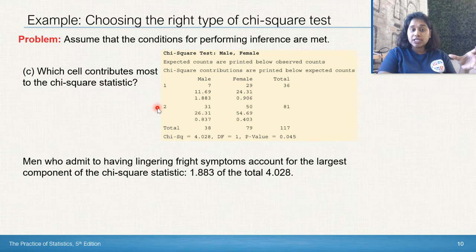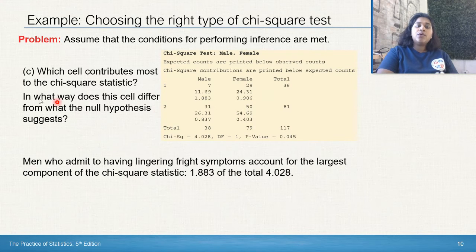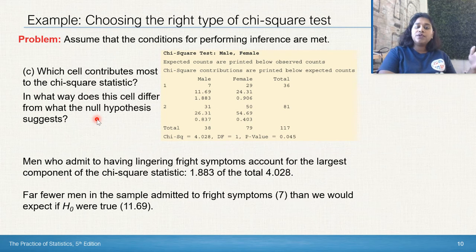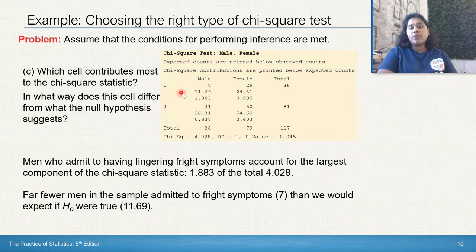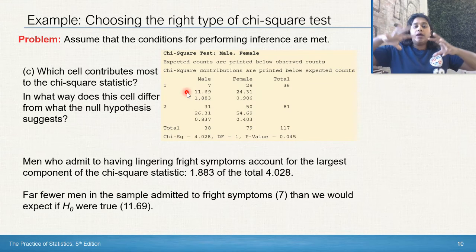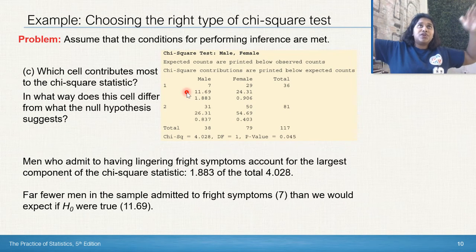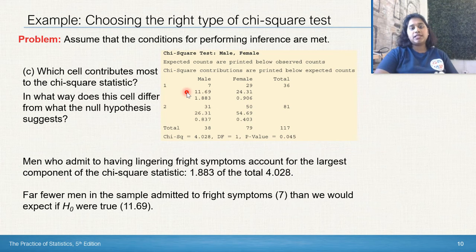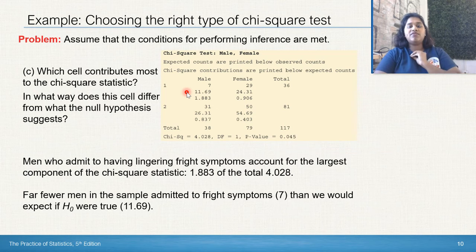That cell has a pretty large chi-square statistic compared to the other three. In what way does this cell differ from the null hypothesis suggestion? Far fewer men in the sample admitted to fright symptoms — only 7 — than we expected under the null, which was 11.69. So we expected many more men to admit to fright symptoms than actually occurred, which is why the chi-square component for that cell is so large compared to females saying yes, males saying no, and females saying no.